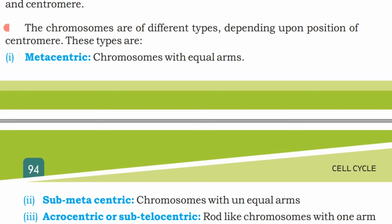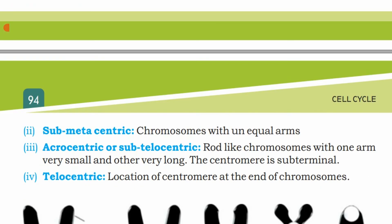Chromosomes are of different types depending on the position of the centromere. Metacentric chromosomes have equal arms. Submetacentric chromosomes have unequal arms. Acrocentric or subtelocentric chromosomes are rod-like with one arm very small and the other very long.